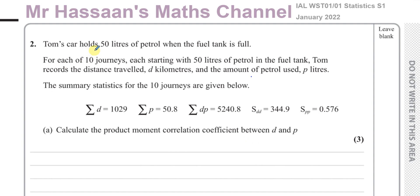Tom's car holds 50 litres of petrol when the fuel tank is full. For each of 10 journeys, each starting with 50 litres of petrol in the fuel tank, Tom records the distance travelled and the amount of petrol used. The distance is d in kilometres and the petrol is p in litres. The summary statistics for the 10 journeys are given below, so n equals 10.